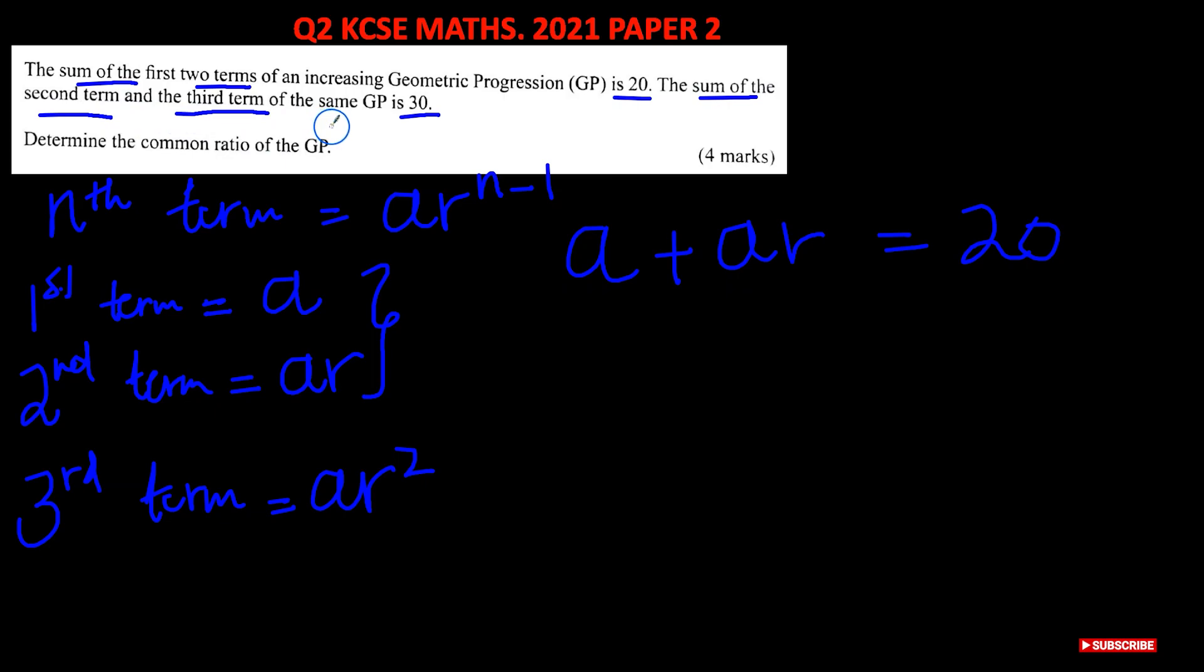And then we are told the second term and the third term add up to 30. So if we add these two, we will get 30. So we're going to add ar to ar squared, and this should give us 30.